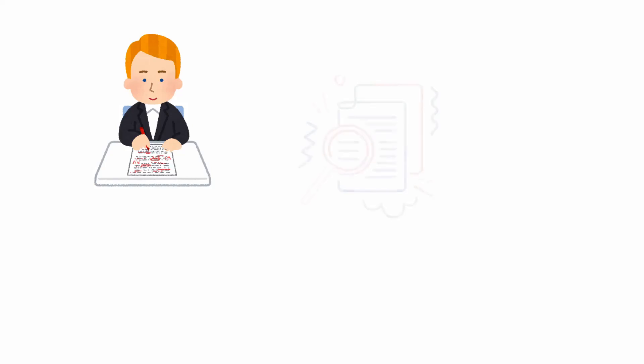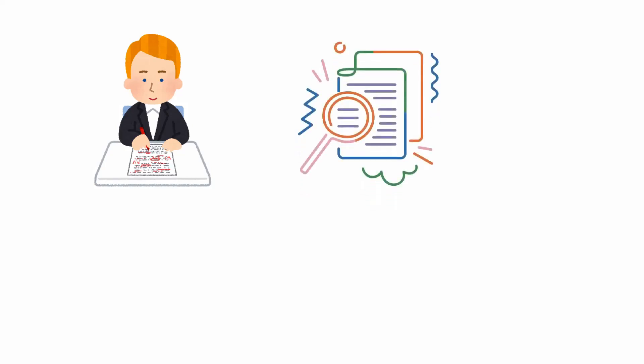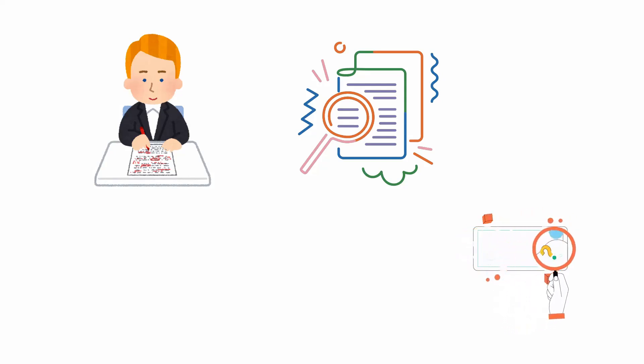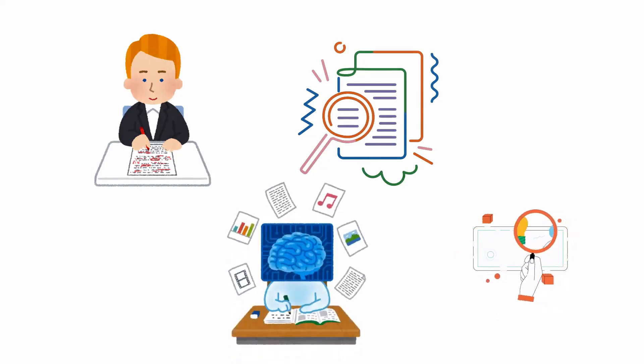For example, when proofreading a document, you focus on the surface details of the text such as spelling errors, punctuation, grammar mistakes, and typographical errors — you are primarily concerned with the physical appearance and correctness of the text rather than its meaning. Conversely, when reading to understand the main points, you might overlook minor errors because your focus is on grasping the overall message and meaning.